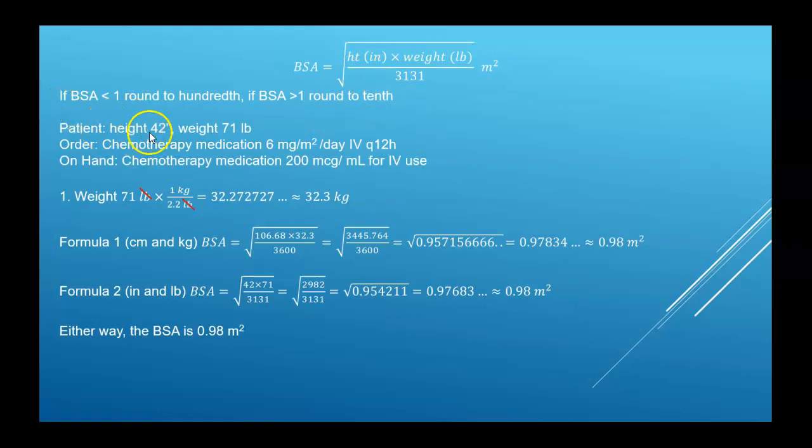Okay, so this patient is 42 inches tall, weighs 71 pounds. This medication, chemotherapy med, has been ordered six milligrams per meter squared, and this is a daily order every 12 hours. So this is going to be given split into two doses, one every 12 hours. So you can take care of that now or you can take care of it later. I'll show you both. On hand you have the chemotherapy medication 200 micrograms per milliliter for IV use. So first the weight, convert the weight to kilograms.